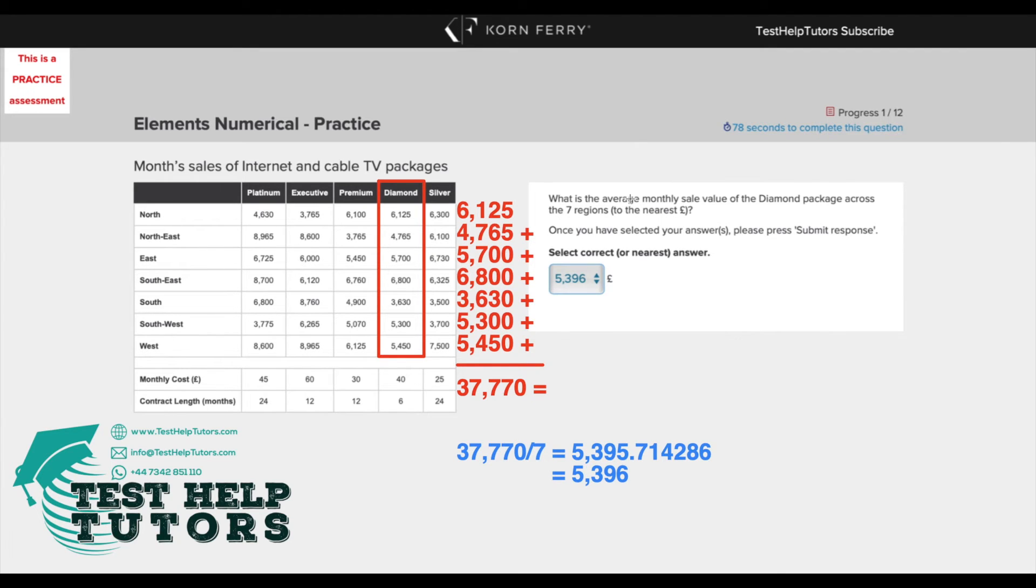To work out the average monthly sale value for this diamond package across the seven areas, what we'd have to do is first work out the total and then divide that total by the seven regions to get an average.